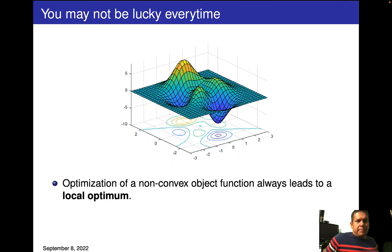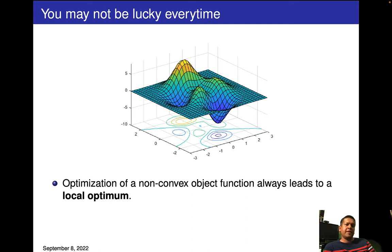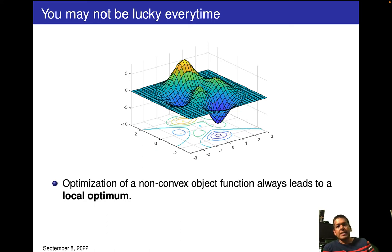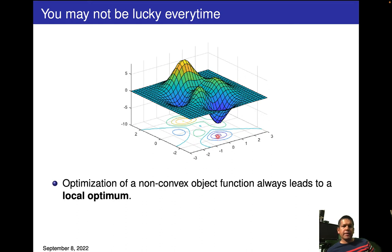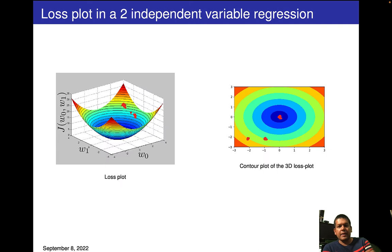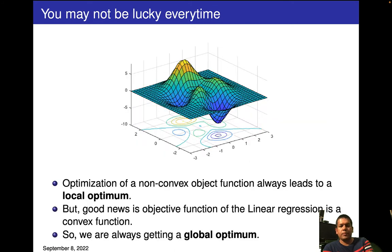To contrast with a non-convex objective function — which we don't need to worry about in our case — if we were given a non-convex function with two input variables, it could have multiple minimum points. If we use gradient descent on such a function, we may end up getting a local optimum. In a convex function, the contour plot has only one single center, so we are guaranteed to find the global optimum.